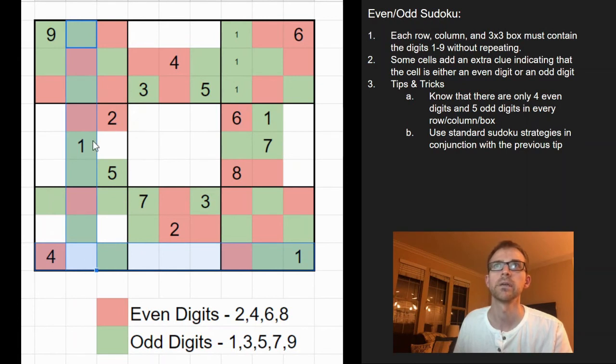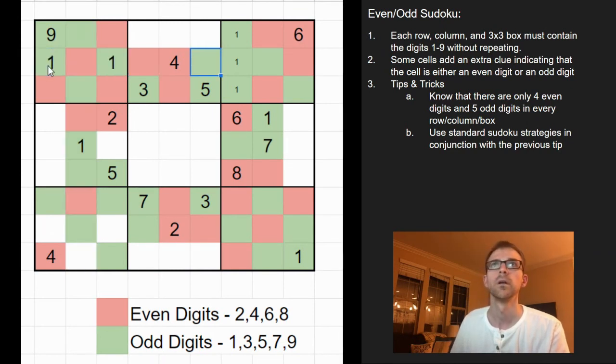And then I can go to the left, see if that's helpful in any way. And no, not really. It's not. But going up is a little helpful. Because now I know the 1 is going to be in one of these. And therefore it can't be in that one.